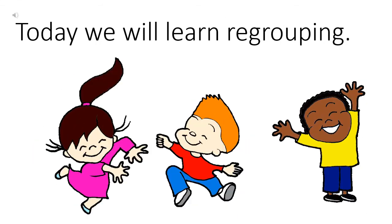Today we will learn regrouping. Aaj hum regrouping karna sikhhenge. Now what is regrouping? When writing numbers in columns, we can have only one digit in each column. Jab hum numbers ko columns mein likhte hain, to har column mein hum ek hi digit likhte hain. Kisi bhi column mein hum do digit ek saath nahi likhte hain.